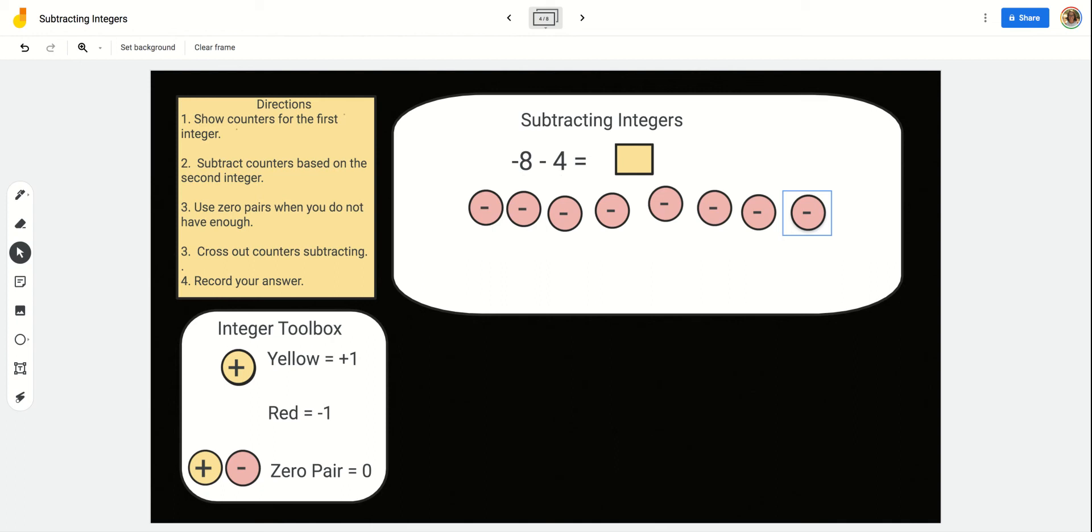This isn't negative 4. And I don't have any positives. So, remember, we can always use a zero pair when we don't have enough. So, I'm going to add 4 zero pairs. Because I need to take away 4 positives. 1, 2, 3, 4. Okay. And let's cross out those 4 positives that we're taking away. 1, 2, 3, 4. And all that's left is negatives.